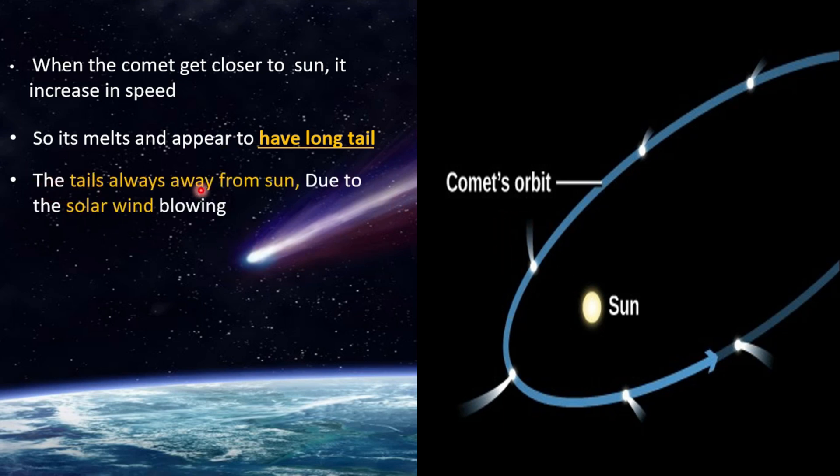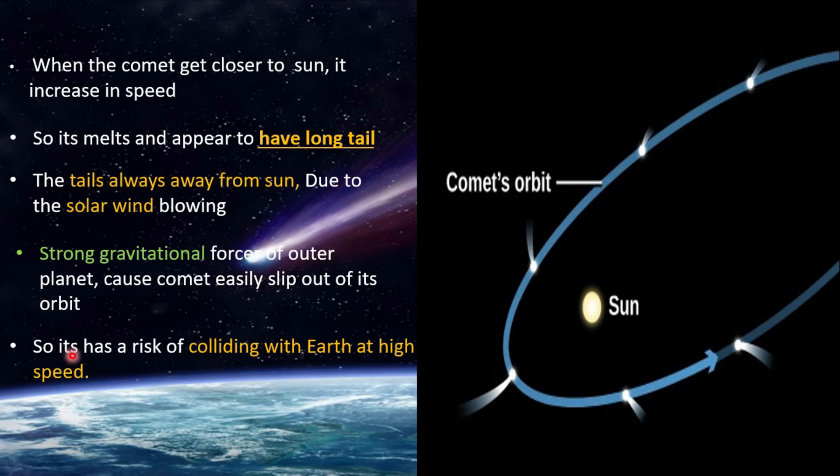The tail always away from Sun due to the solar wind blowing. Then, the strong gravitational forces of outer planets cause comet easily slip out of its orbit. So, it has a high risk of colliding with Earth at high speed.